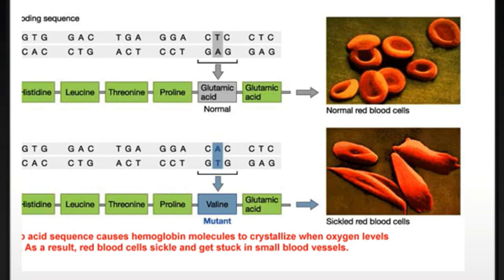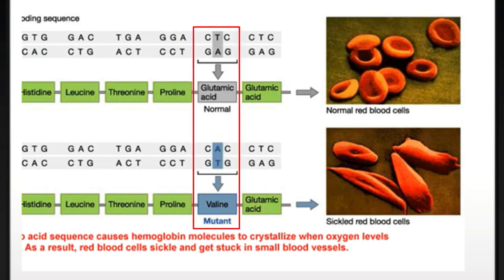Hemoglobin کے اندر 4 peptide chains ہوتی ہیں — 2 alpha اور 2 beta. Sickle cell anemia میں اس کی دونوں beta chains کے اندر mutation ہو جاتی ہے. Actually ہوتا کیا ہے کہ genetic code میں change ہوتی ہے جس کی وجہ سے amino acids کا sequence change ہو جاتا ہے، and glutamic acid is replaced by valine.